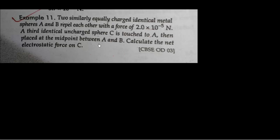Two similar, equally charged, identical metal spheres A and B repel each other with a force of 2×10⁻⁵ Newton. A third identical uncharged sphere C is touched to A, then placed at the midpoint between A and B. Calculate the net electrostatic force on C.